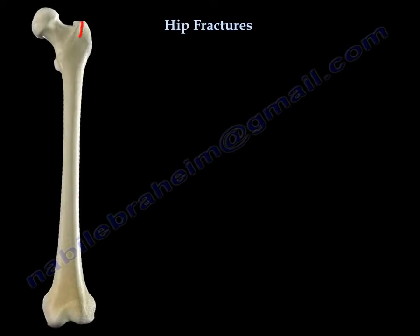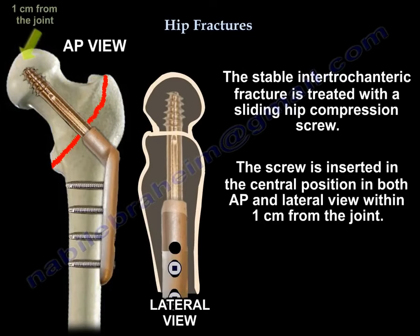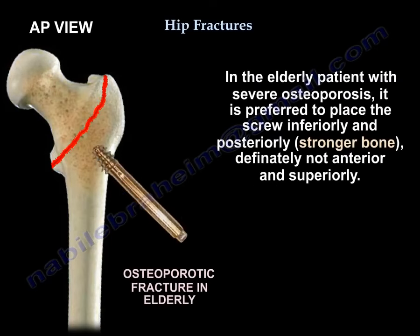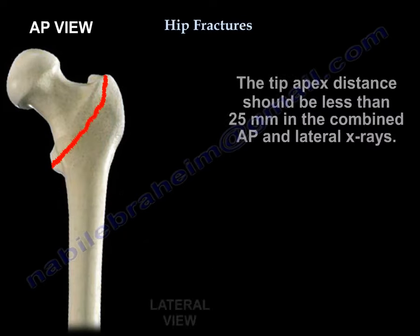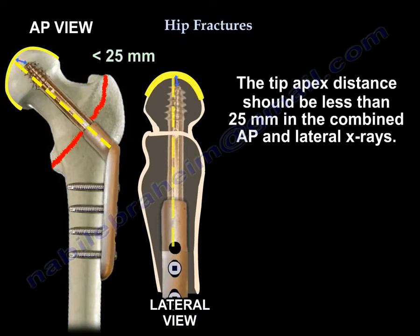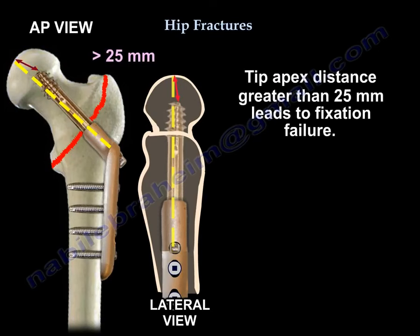For stable fractures, treatment is with a sliding hip compression screw. Insert the screw center-center both in AP and lateral views. In elderly patients with severe osteoporosis, it is preferred to place the screw inferiorly and posteriorly — definitely not anteriorly and superiorly. The tip-apex distance should be less than 25 mm on both AP and lateral X-rays, as greater than 25 mm leads to fixation failure.